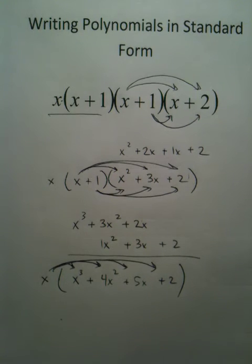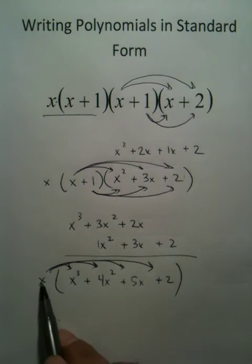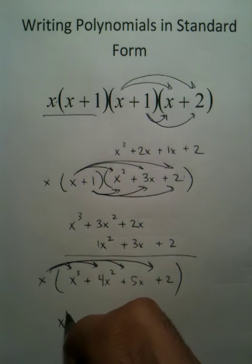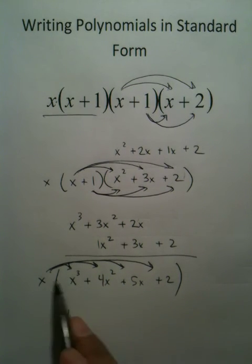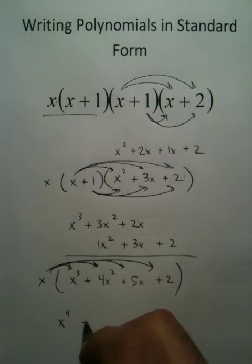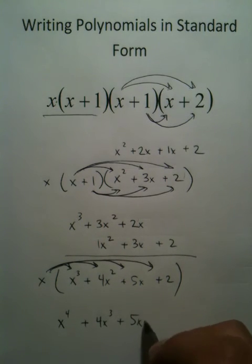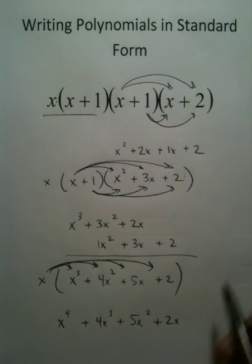In this last step, though, be very careful. You don't want to make careless mistakes. x times x to the third is x to the fourth. I've seen kids put 2x before. That's wrong. 4x to the third, 5x squared, 2x.